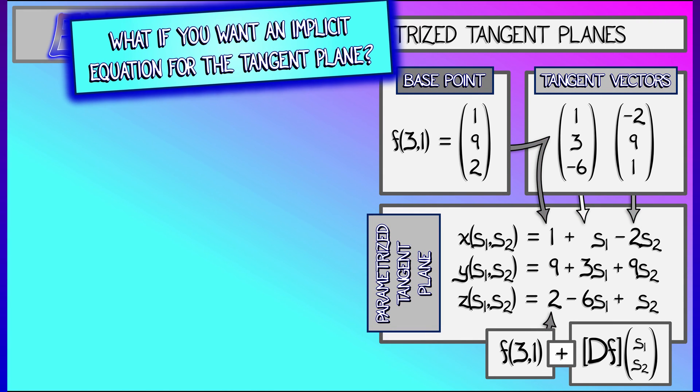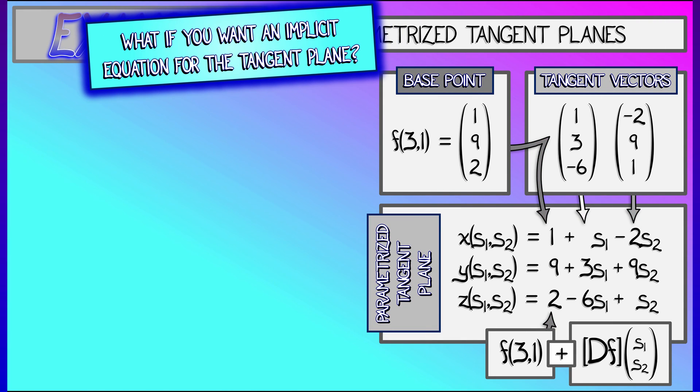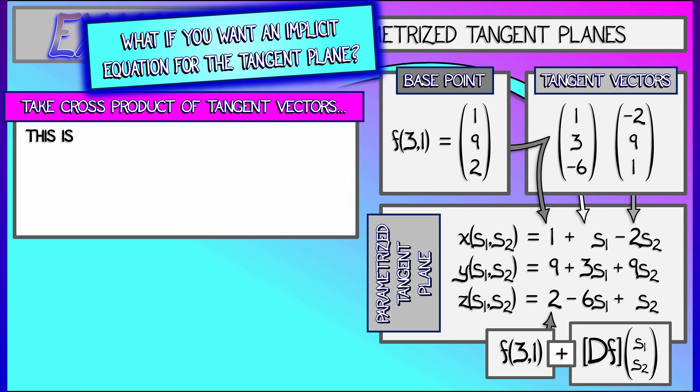Okay. Now, what if instead of a parametrized plane, you want an implicit equation for this tangent plane? Some function of x, y, and z. Okay. In this case, we could take the cross product of these two tangent vectors.